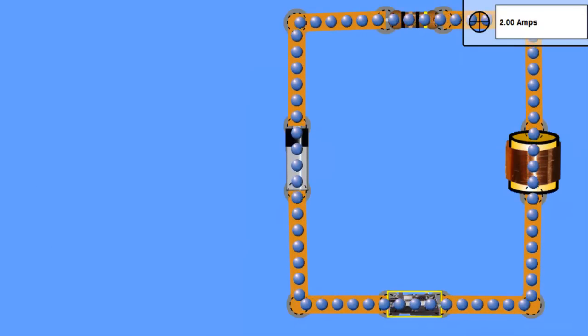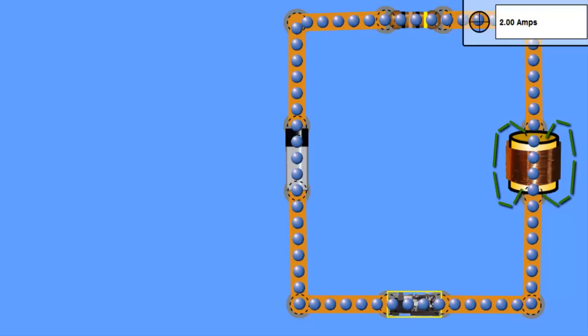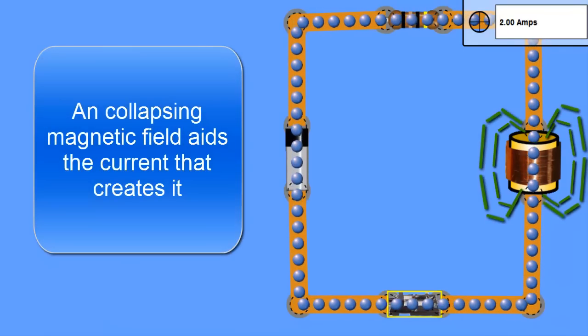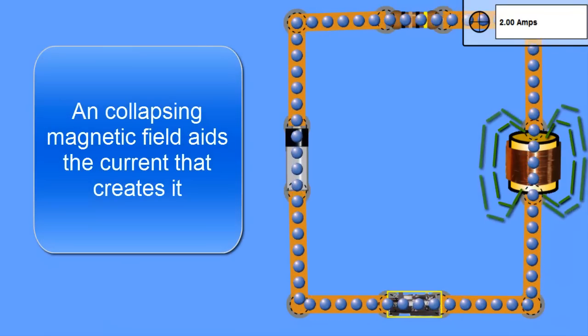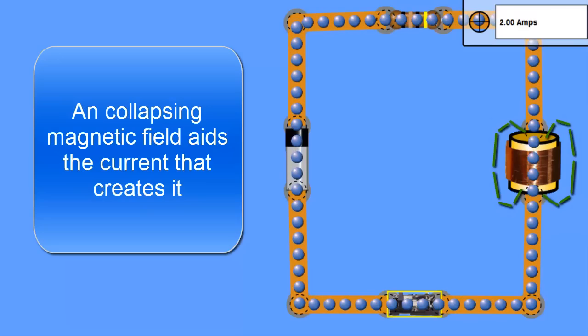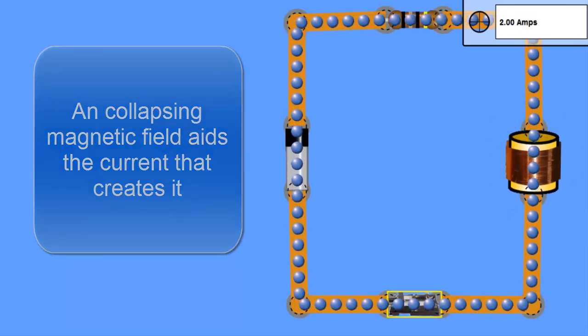But the net result is we store energy in this magnetic field. And when the magnetic field is building it's pushing against the current. And when it's collapsing it's aiding the current, causing the current to continue to flow in the same direction it was going before.